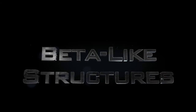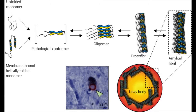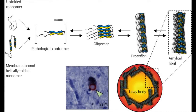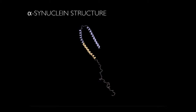Beta-like structures are directly related to alpha-synuclein aggregation, suggesting that a critical concentration of alpha-synuclein in beta-like structures is needed to trigger oligomer, fibril, and Lewy body formation. Alpha-synuclein is a major constituent of Lewy bodies.